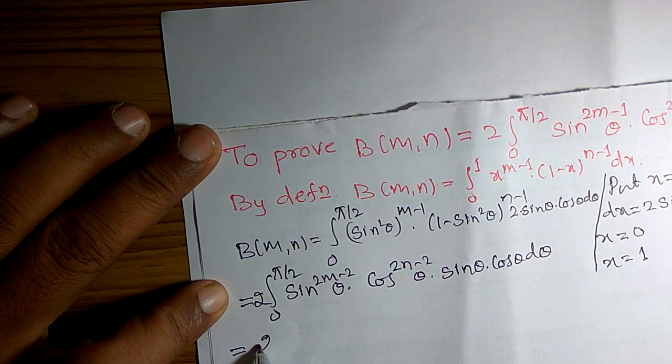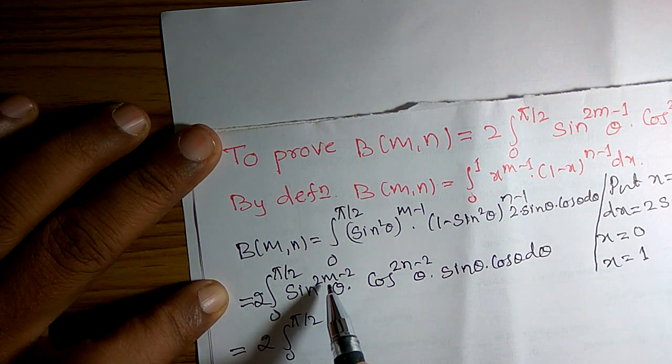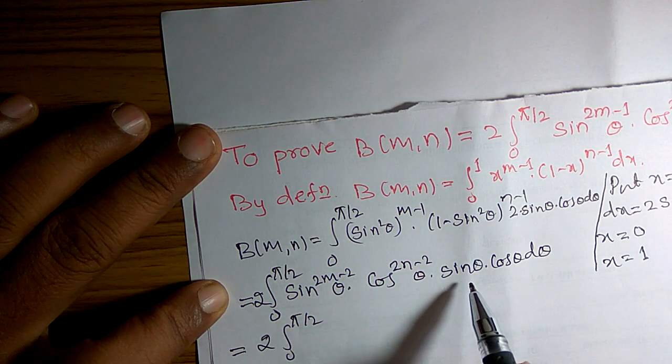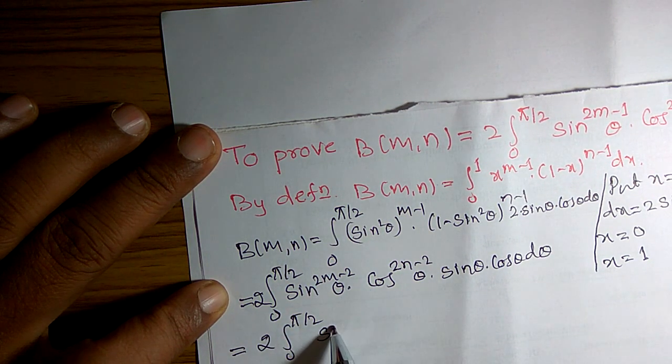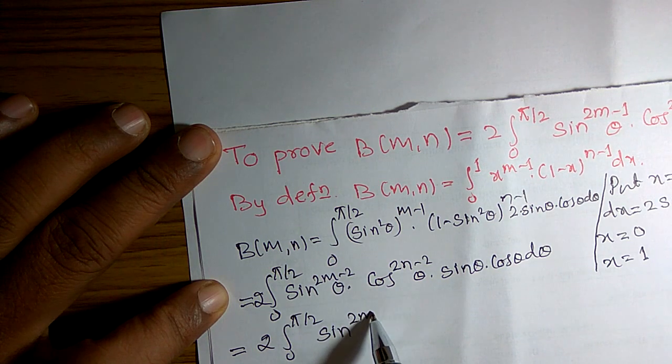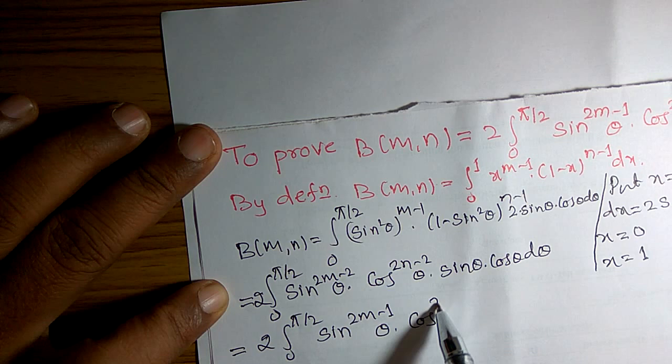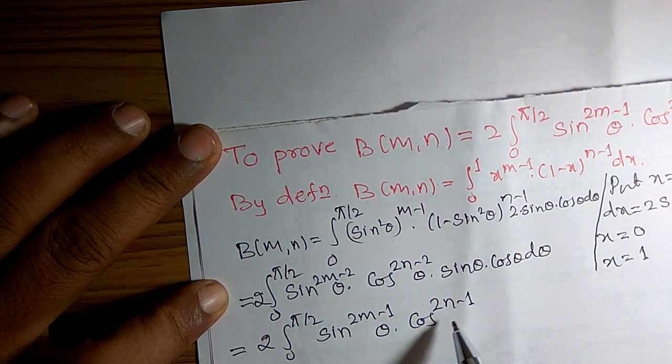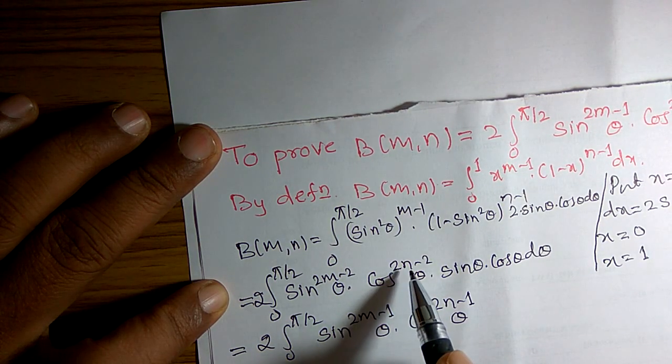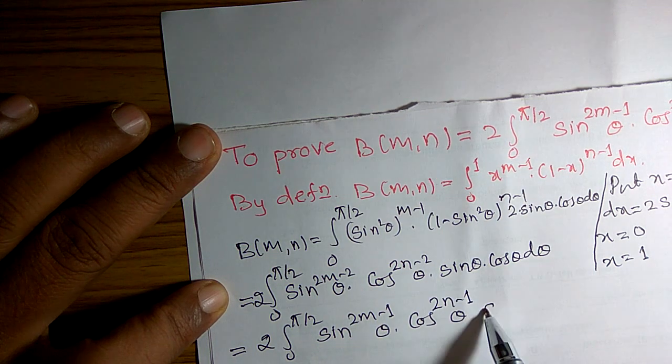This is equal to 2 times integral 0 to pi by 2 of sin raised to 2m minus 2 theta into sin theta. You can add the power: sin raised to 2m minus 1 theta. Similarly, cos raised to 2n minus 1 theta d theta.